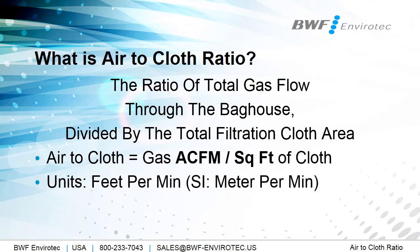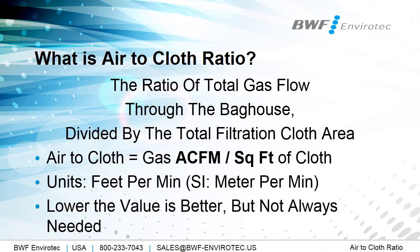The units for air-to-cloth ratio, when reduced down, go to feet per minute, or if you're working in SI, meters per minute. And lastly, the lower the value is better, but not always needed, as it depends on what the baghouse is actually collecting and what the system is doing. Like golf, lower is better, but in some situations, not always needed.